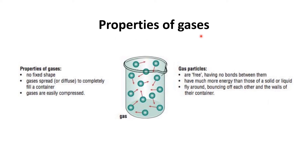The third state of matter is gases. Gases do not have a fixed shape and spread to completely fill a container. Gases are easily compressed because there is a lot of space between the particles. Gas particles have no bonds between them, as the intermolecular forces are at a minimum. They have much more energy than particles in a solid or liquid, vibrating faster and flying around, bouncing off each other and the walls of their container.